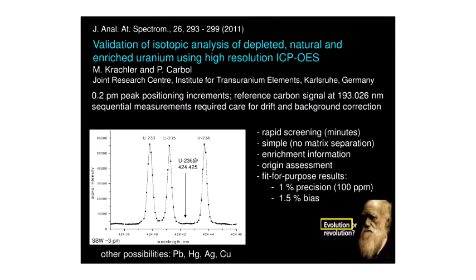Modern ICP-OES systems can also, with high resolution, separate isotopic signatures. Michael Crackler demonstrated this by looking at uranium and achieving near-baseline-resolved signatures for uranium-233, -235, and -238. If the sample had been enriched in U-236, the signal would appear in a predictable position. This is good for rapid screening with no matrix separation, providing information on potential uranium enrichment, with precision on the order of 1% at 100 ppm concentration, albeit with a small bias relative to true values.